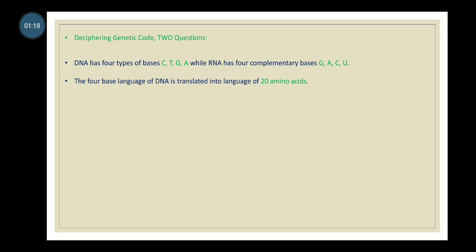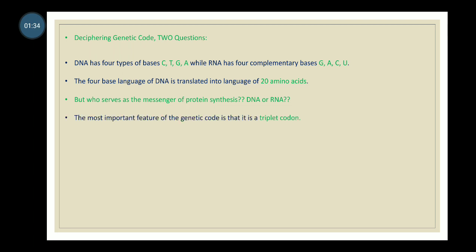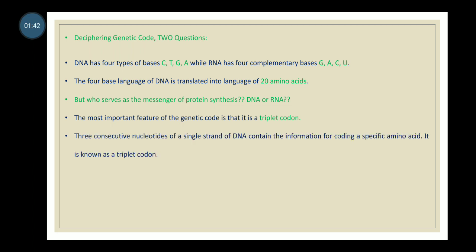The four-base language of DNA is translated into the language of 20 amino acids. The first question that arises is: who serves as the messenger of protein synthesis — DNA or RNA? The most important feature of the genetic code is that it is a triplet codon. Three consecutive nucleotides of a single strand of DNA contain the information for coding a specific amino acid. This is known as the triplet codon.